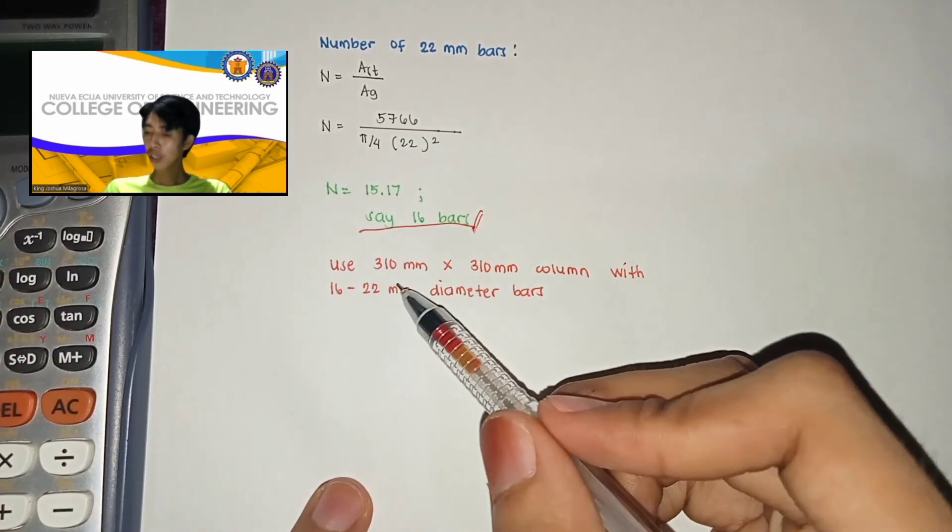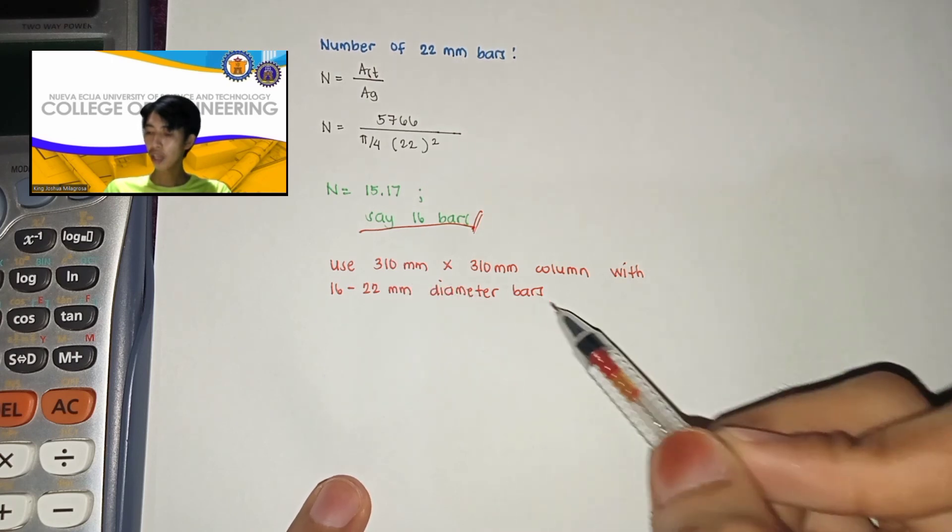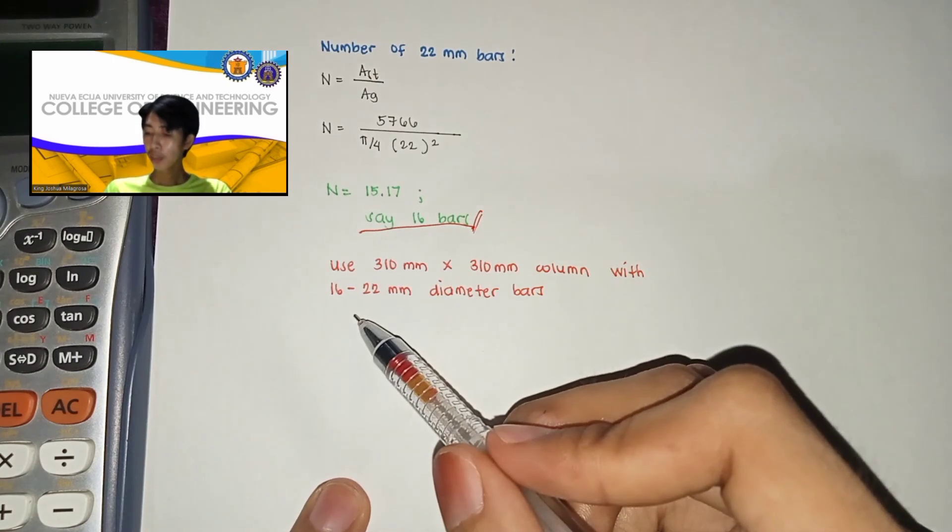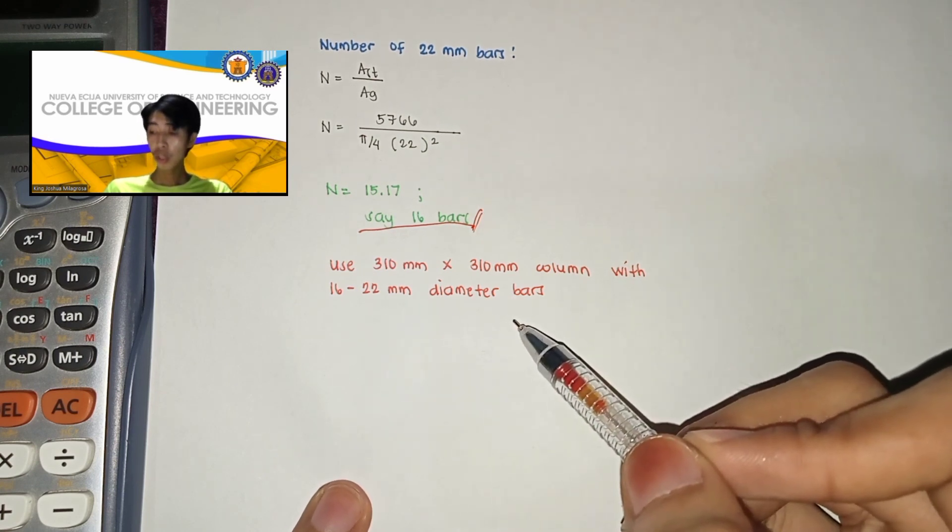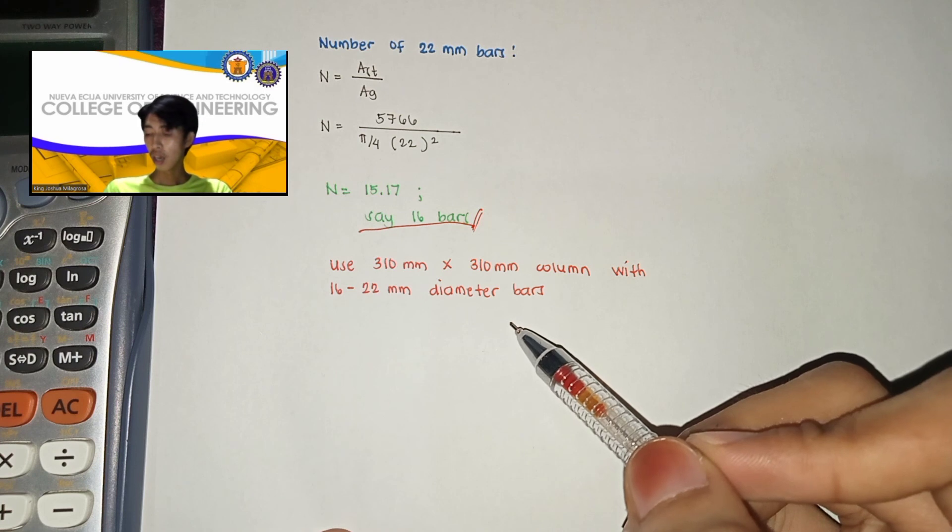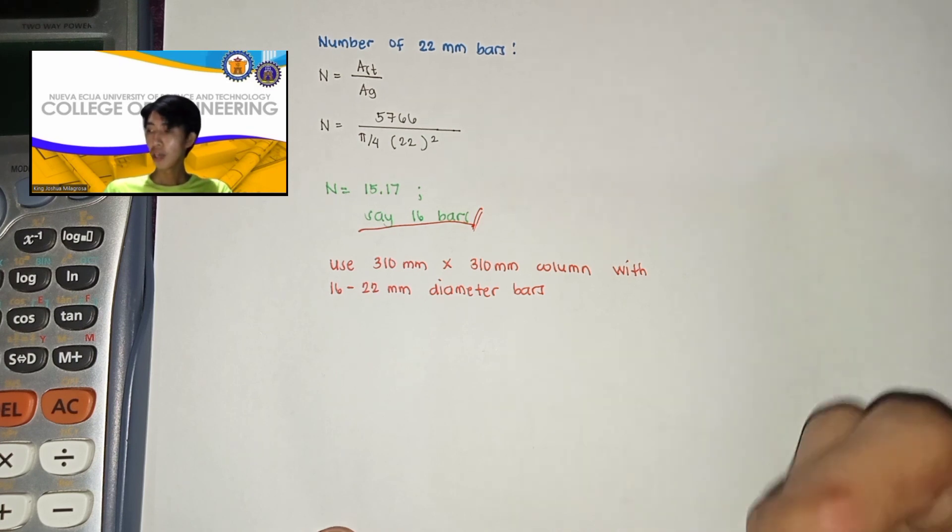So here sa design natin, use 310 mm by 310 mm column with 16 22 mm diameter bars. So yun lang for today's video. Maraming salamat.